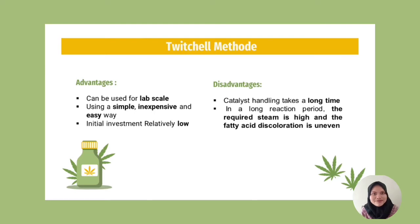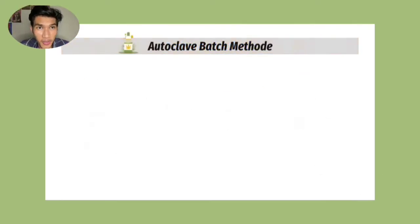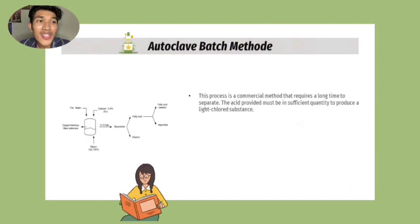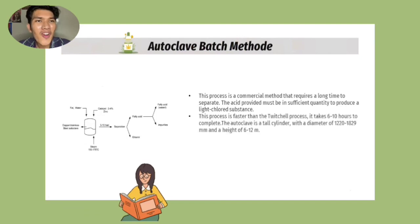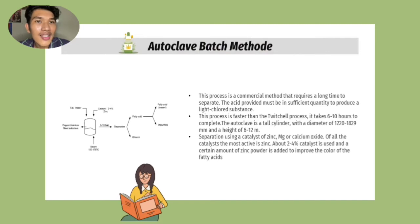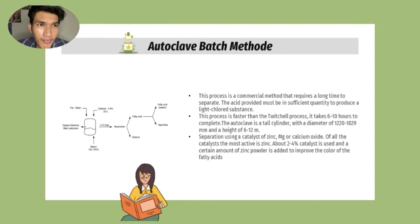Now I want to explain the autoclave batch method. This process is a commercial method that requires a long time to separate. The water provided must be in sufficient quantity to produce a light-colored substance. This process is faster than the Twitchell process — it takes 6 to 10 hours to complete. The autoclave is a tall cylinder with a diameter of 12 to 18 inches and height of 6 to 12 meters. It uses catalysts of zinc, magnesium, or calcium oxide, of which zinc is the most active. About 2 to 4% catalyst is used, and a certain amount of zinc powder is added to improve the color of the fatty acid.